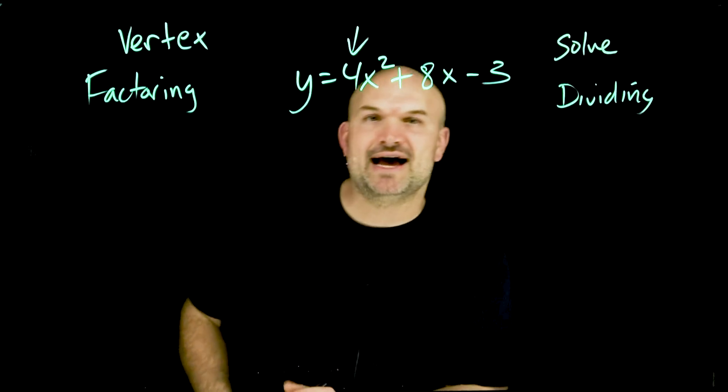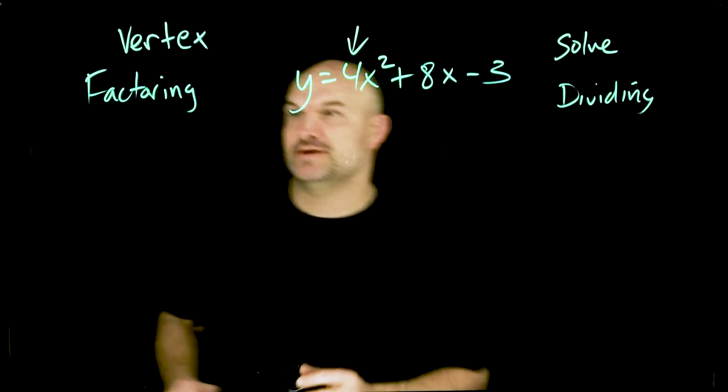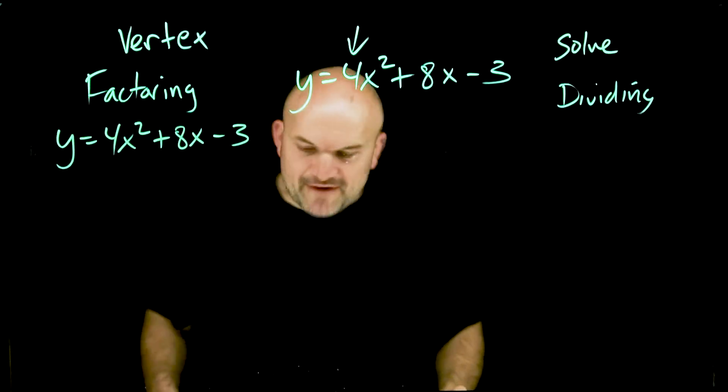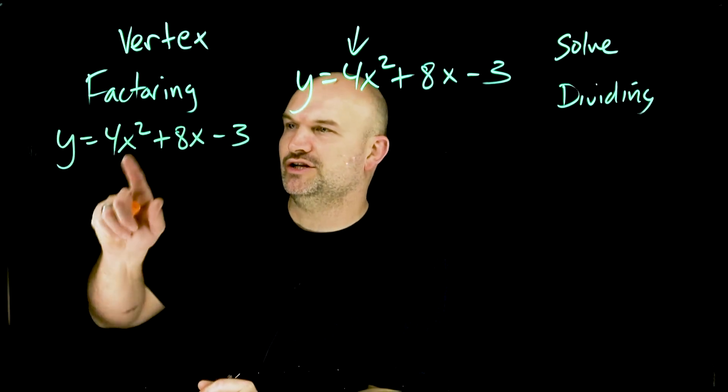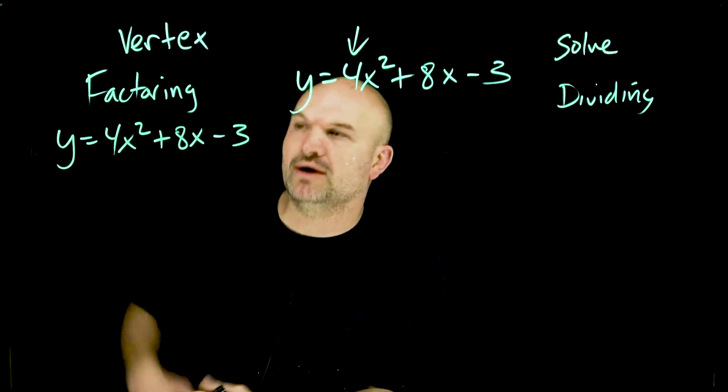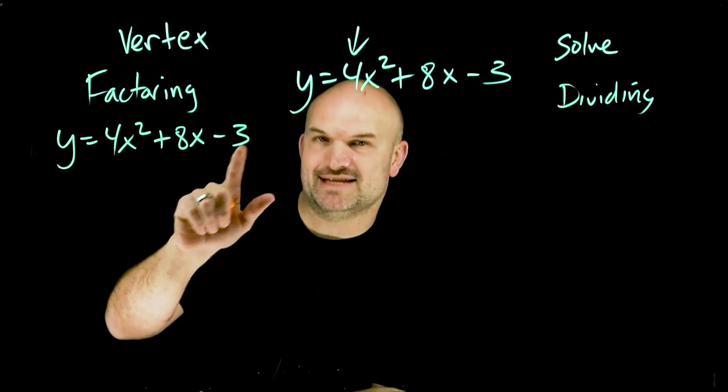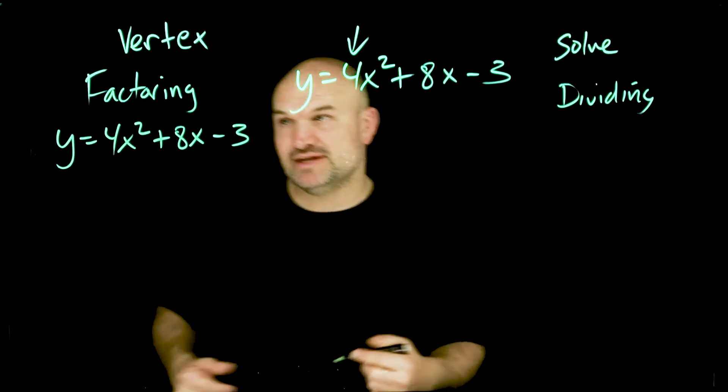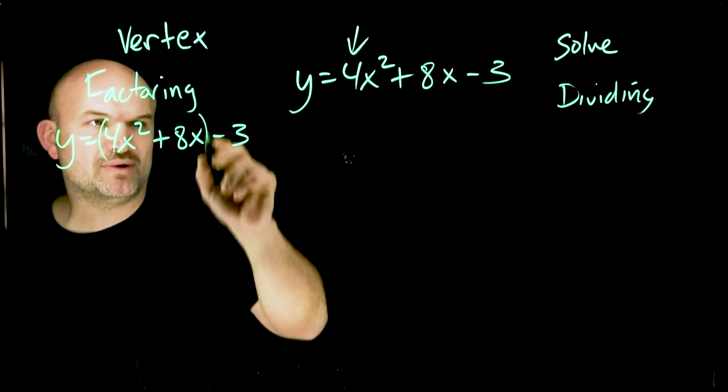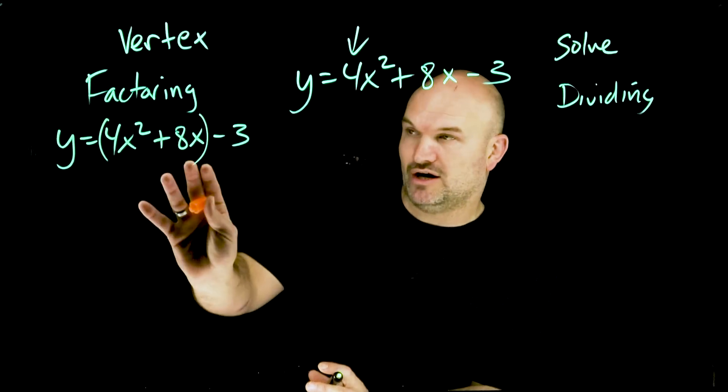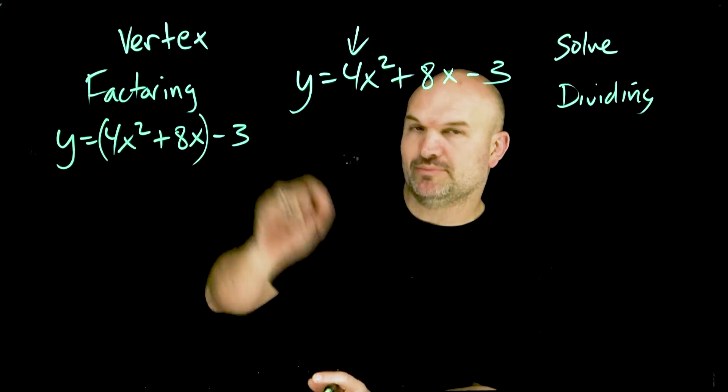So let's take a look at the factoring approach first. For the factoring approach, we're going to factor out the four. The problem is I cannot factor out a four out of a 4, 8, and 3. So we're going to do grouping by putting some parentheses here. I'm not changing the value of this expression at all. I'm just grouping 4x² plus 8x.